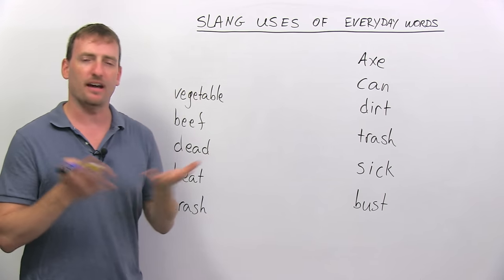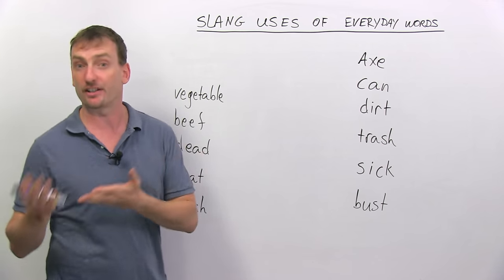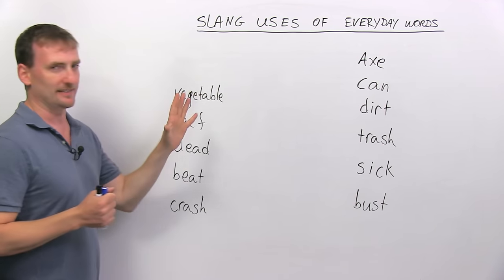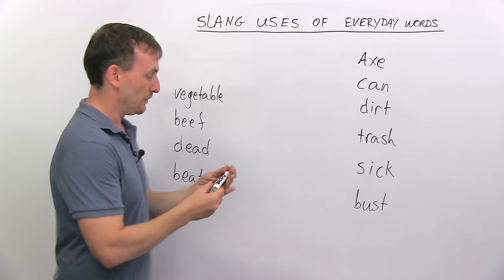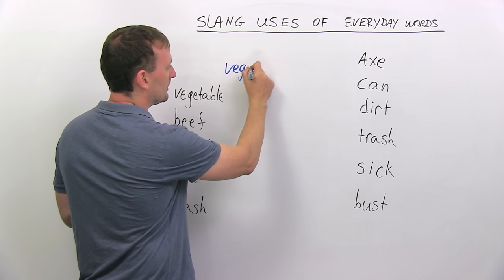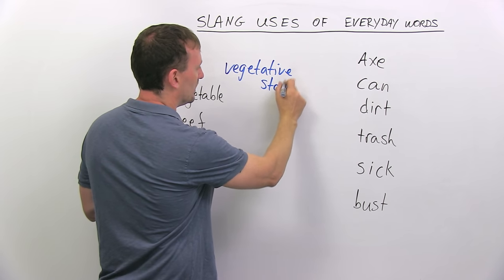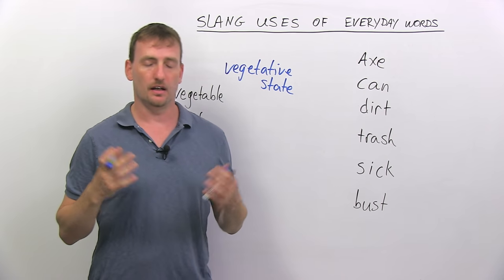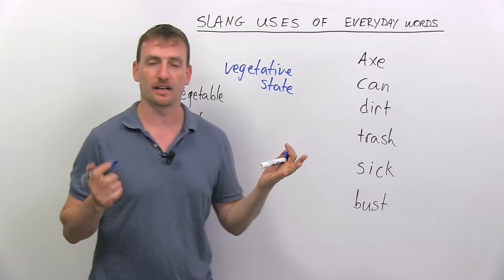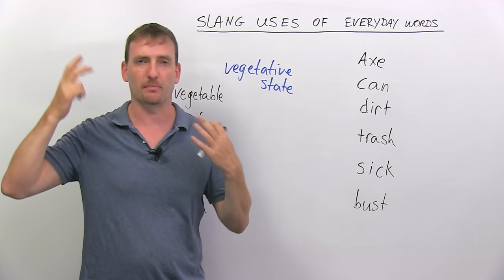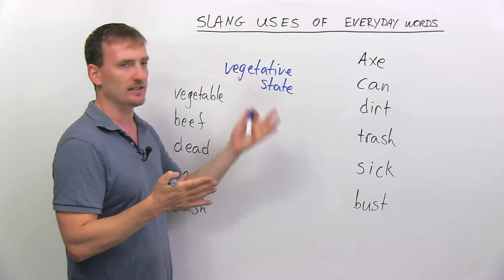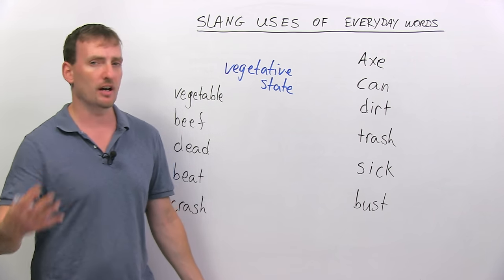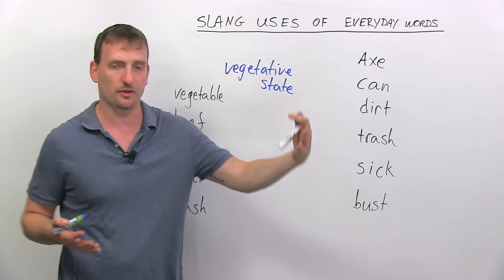So, for example, vegetable. I think everybody knows this word — it's something you eat, like fruits and vegetables, like a lettuce or a cucumber. But did you know that vegetable can also mean when we talk about something being in a vegetative state? When a person gets into a car accident and hits their head, and they're in the hospital in a coma, they're in a vegetative state — not much brain activity. So we say this person is like a vegetable, just lying there, alive but not moving.